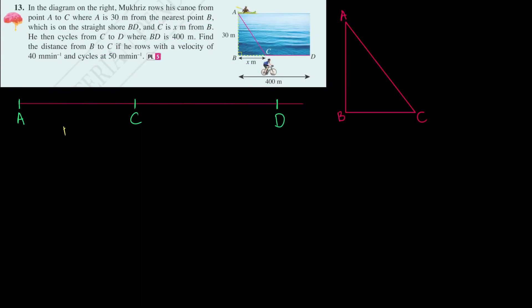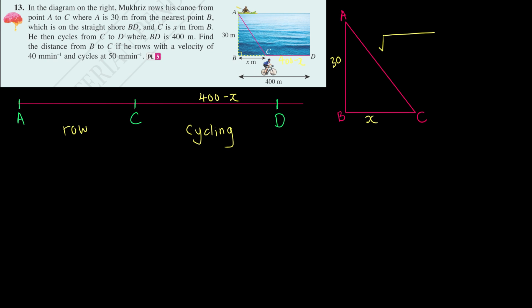The next problem: Mukherj is rowing from A to C and cycling from C to D. The distance CD = 400 − x. To find AC, note it is the hypotenuse of a right-angled triangle where one side is 30 and the other is x. By Pythagoras, AC = √(30² + x²) = √(900 + x²).